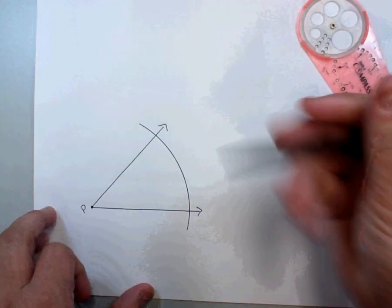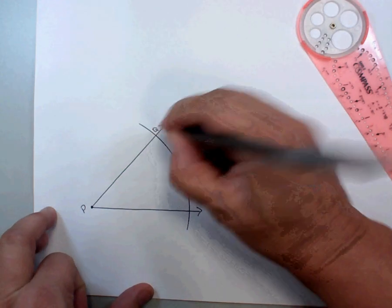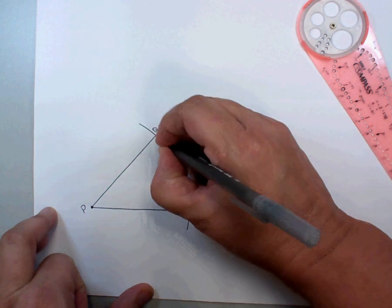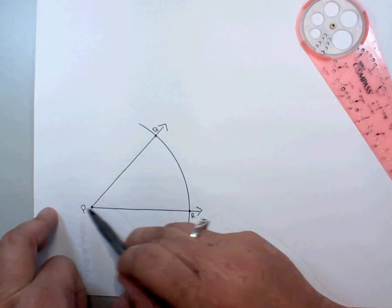And we're going to label those intersections Q and R. So points Q, point R. We now have angle QPR.